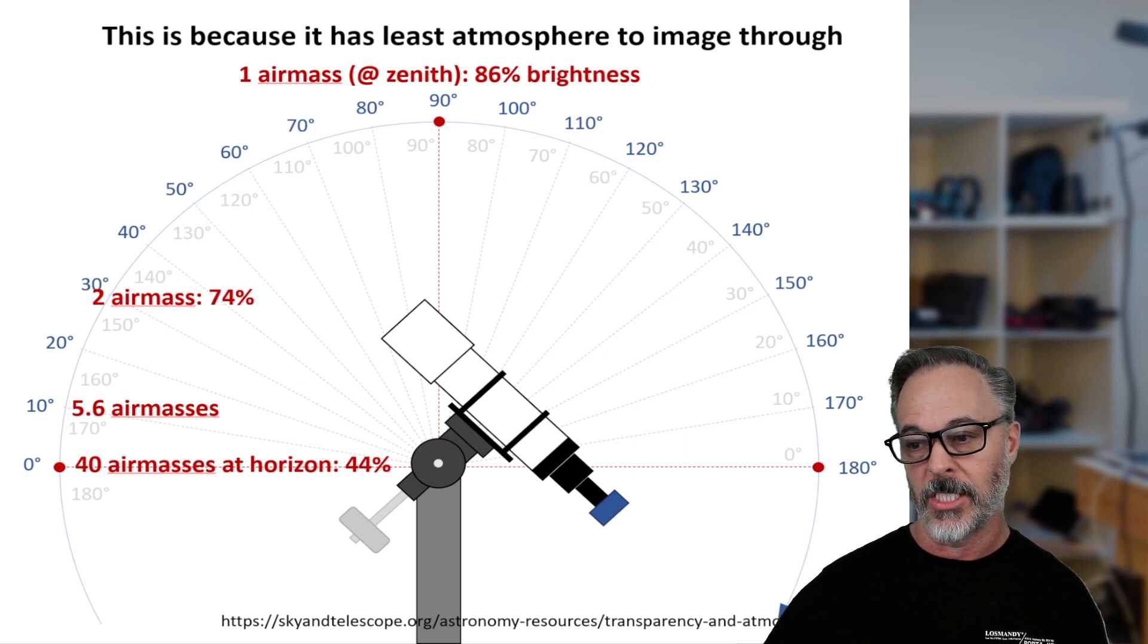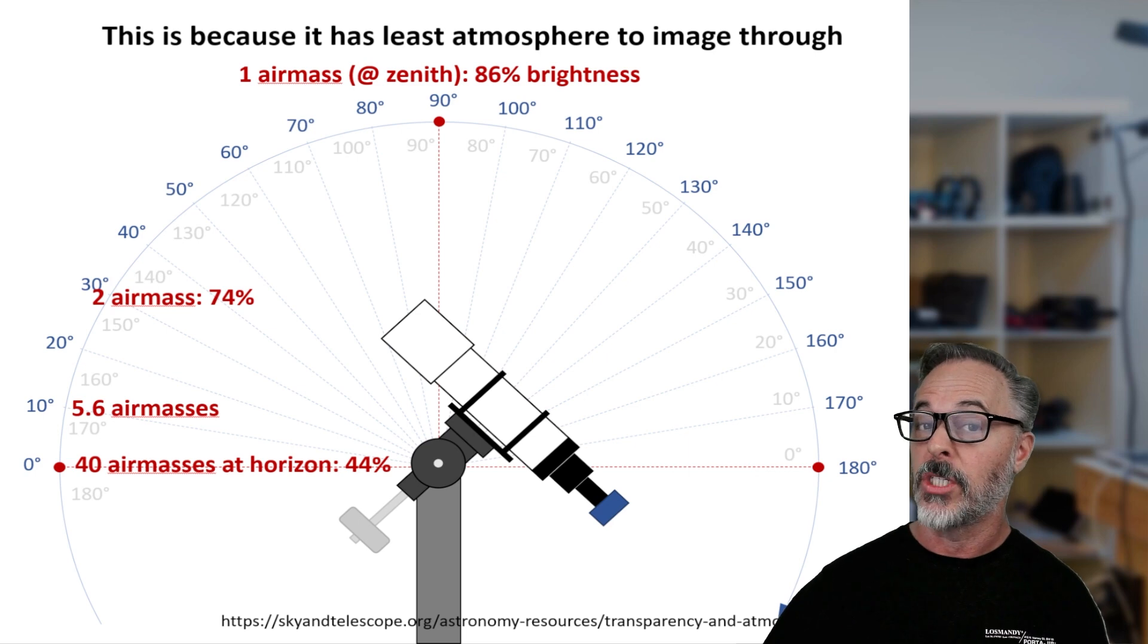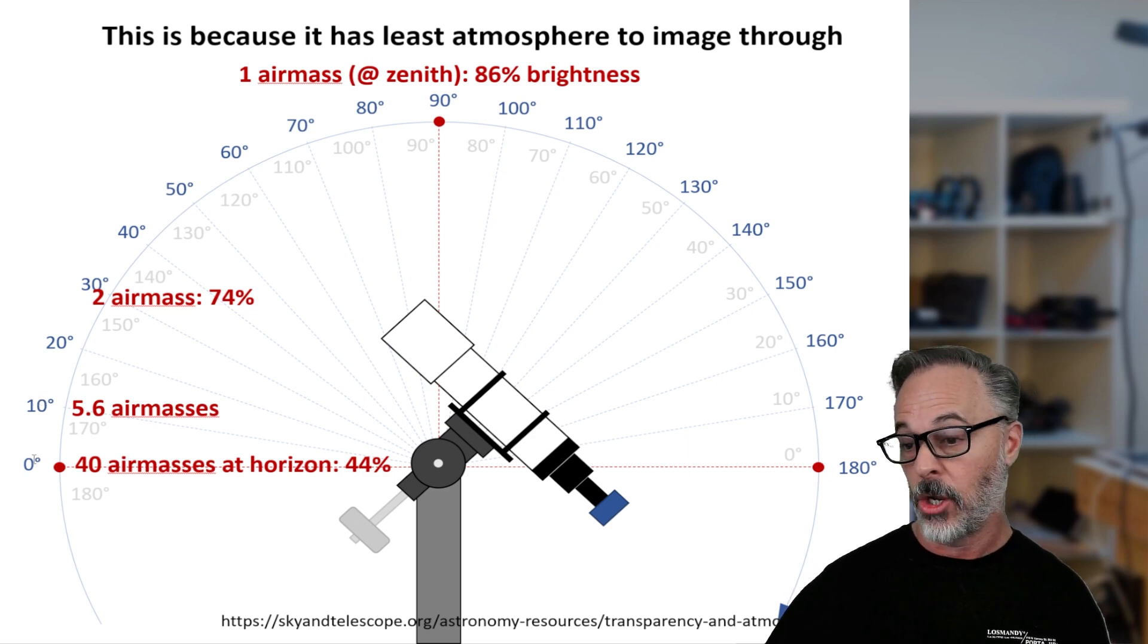Now that doesn't seem too bad, but then when you start to get down into lower altitude, so at 30 degrees, a target above the horizon, this is going to be the equivalent of two air masses. And now your target goes down to 74% brightness. So it's starting to drop in brightness as you shoot through more of the atmosphere.